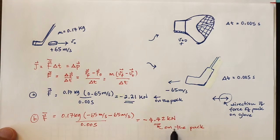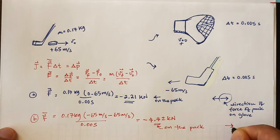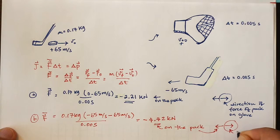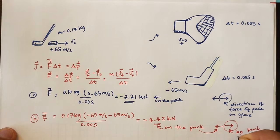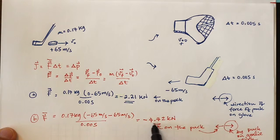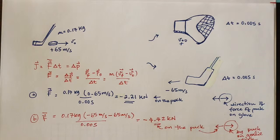I'm calculating the change in momentum of the puck, which gives the average external force on the puck. If I want the force that the puck exerts on the stick, it will be in the opposite direction and the same magnitude — 4.42 kilonewtons. This is on the puck, and by Newton's third law the force of the puck on the goalie's stick has the same magnitude.